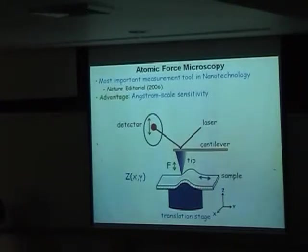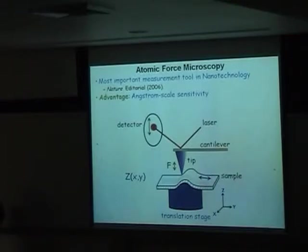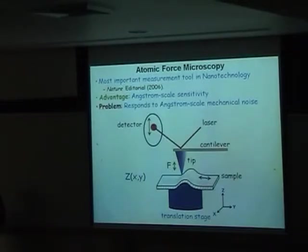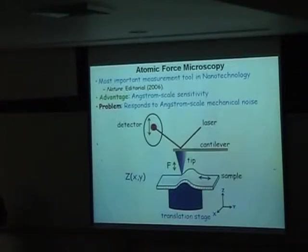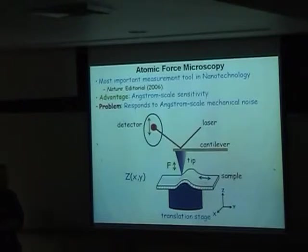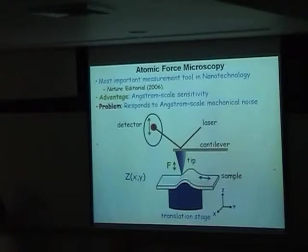One of the real powers of atomic force microscopy is its sensitivity to motion or distances at the level of an angstrom, or indeed a fraction of an angstrom. It can work in aqueous solution and in high vacuum. It's a force-based technique as opposed to scanning tunneling, which is typically good for metals in high vacuum. The disadvantage is it's sensitive to all types of motion at the angstrom level - your tip and sample are both moving around at that scale, smearing out images due to thermal and environmental fluctuations.